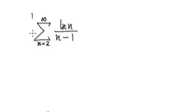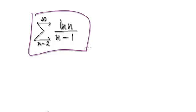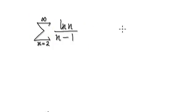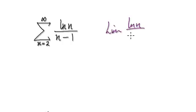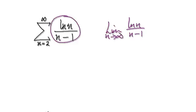So to do this, in order for a series to converge, the limit of this must be equal to zero. So first, check that the limit of this is equal to zero, because in order for a series to converge, the limit of this thing must be zero.